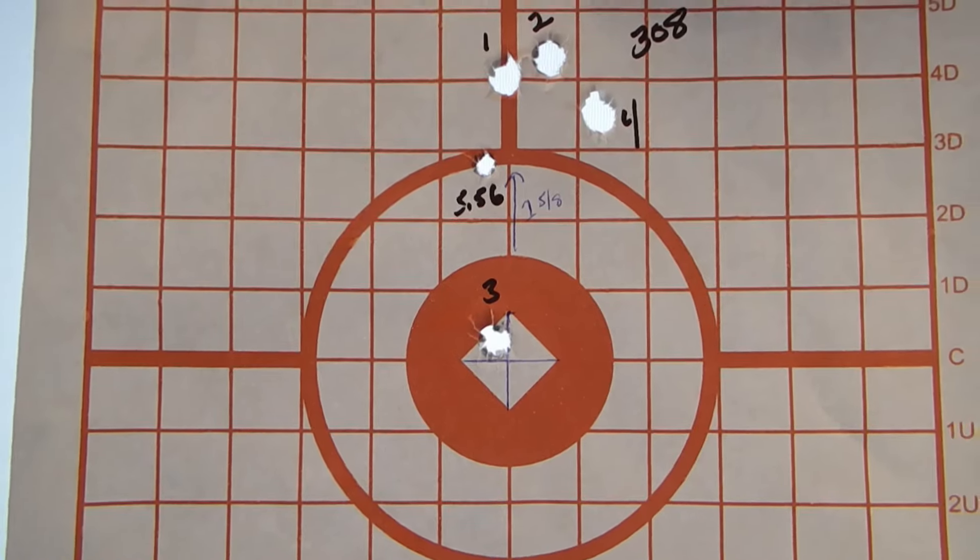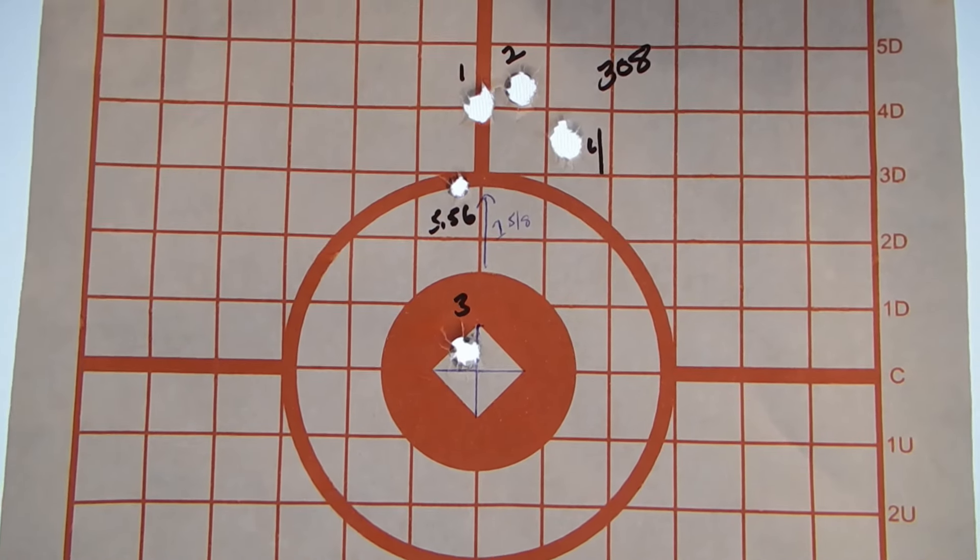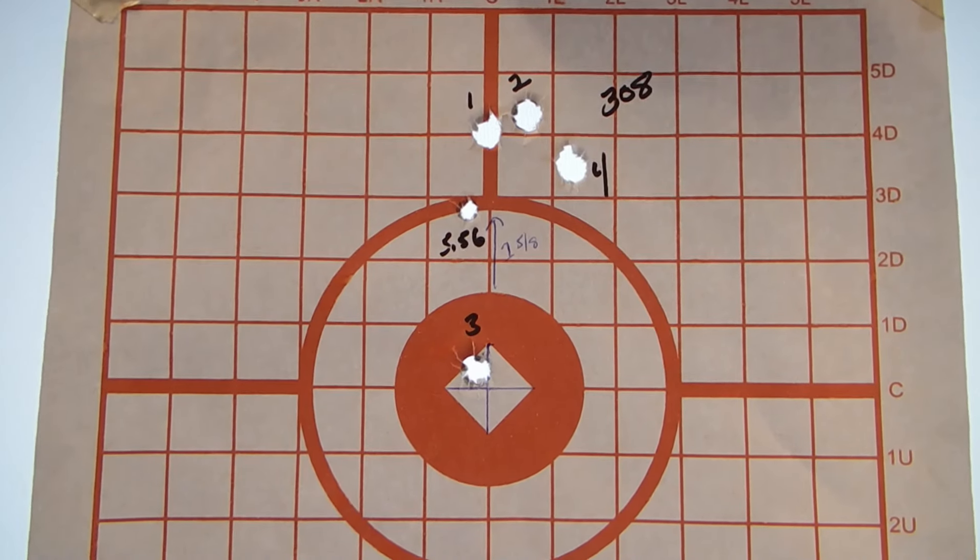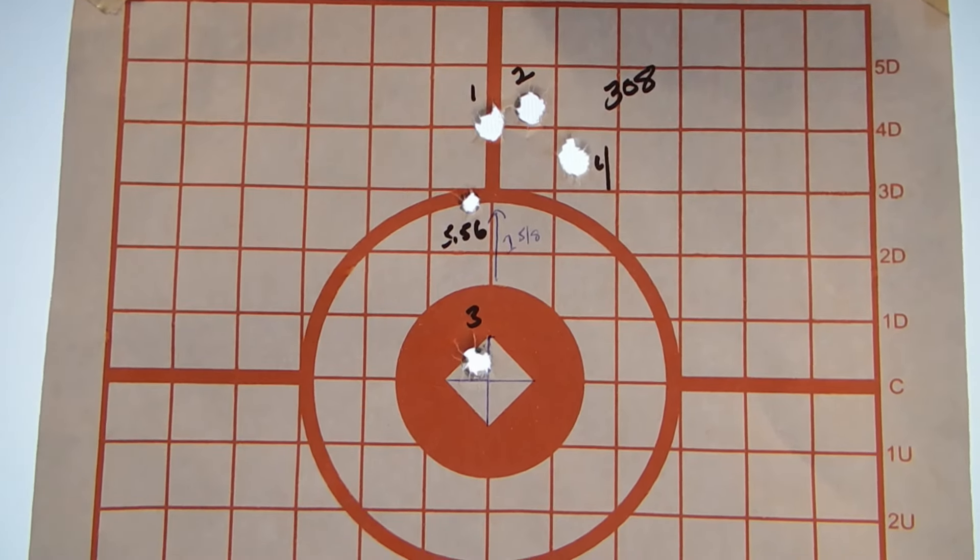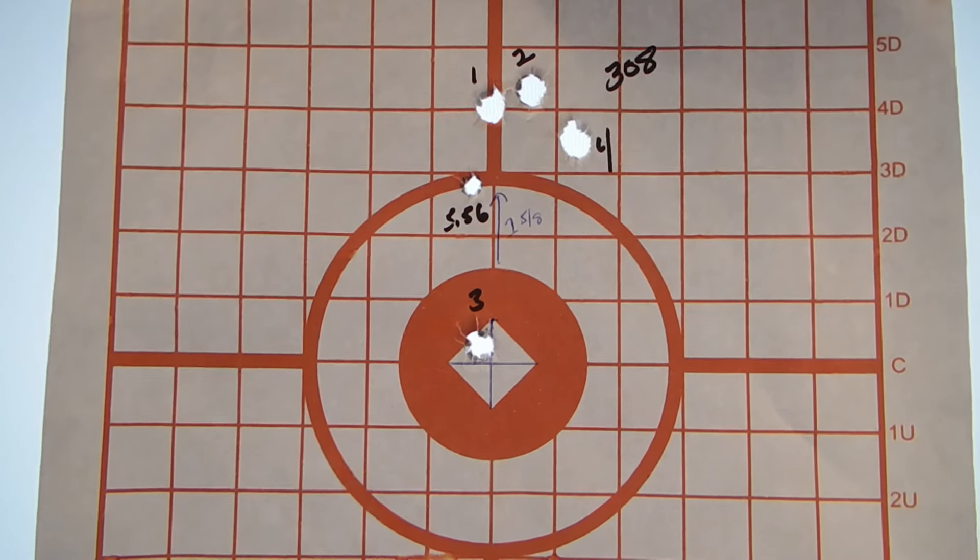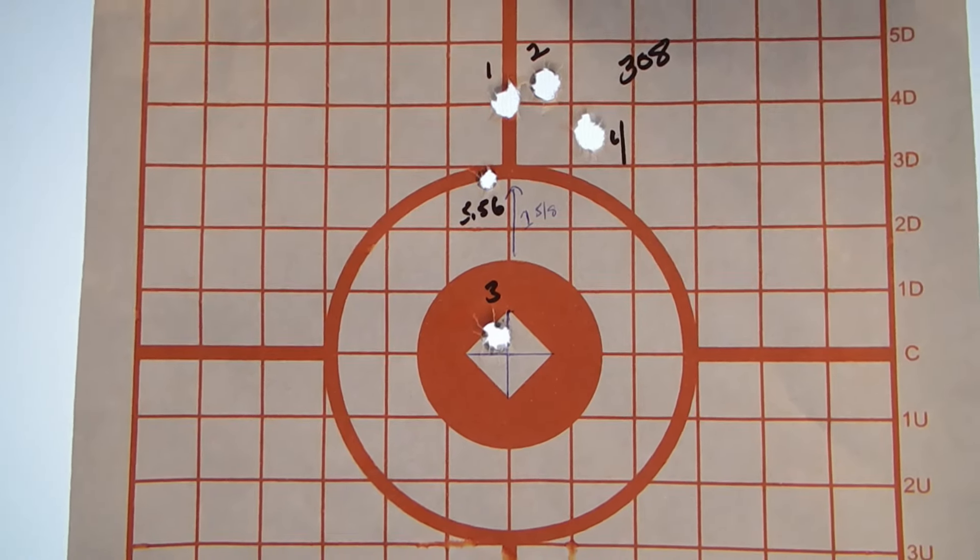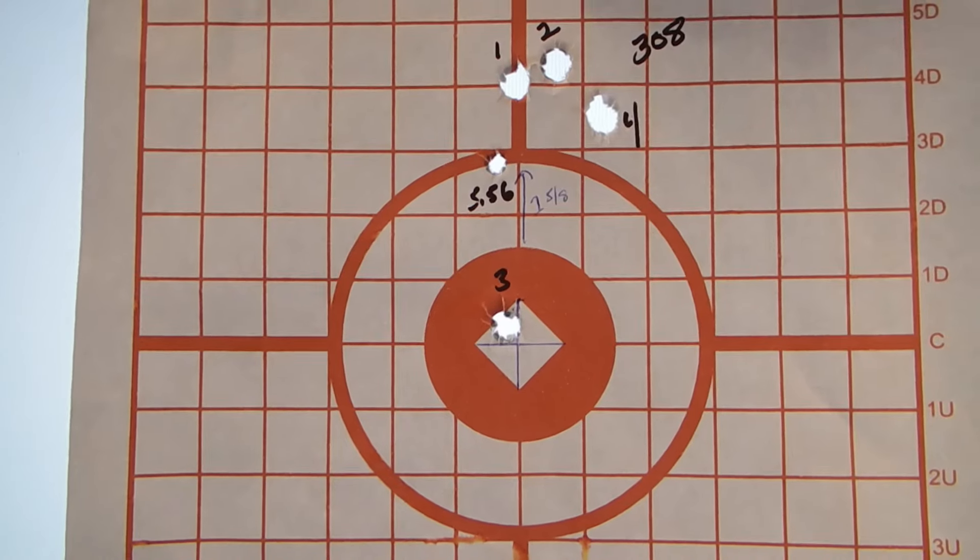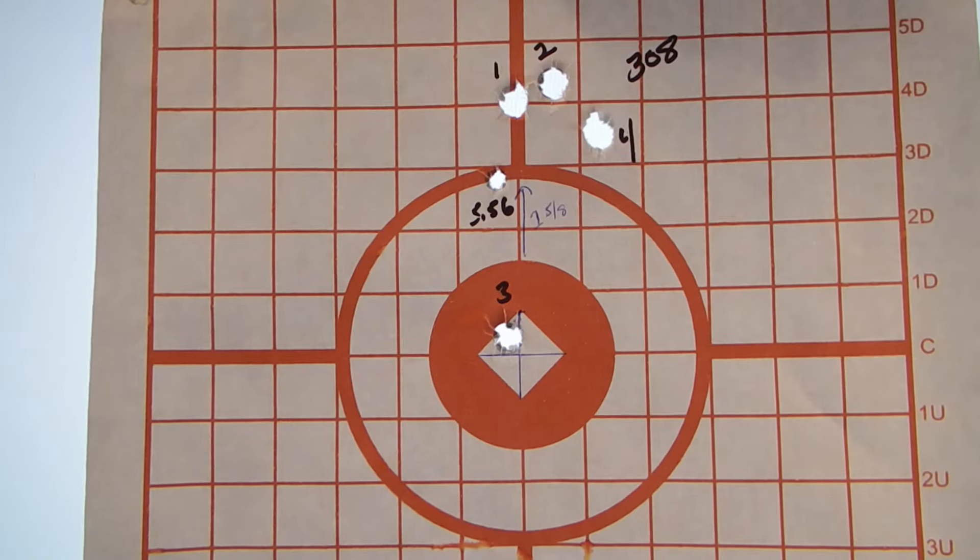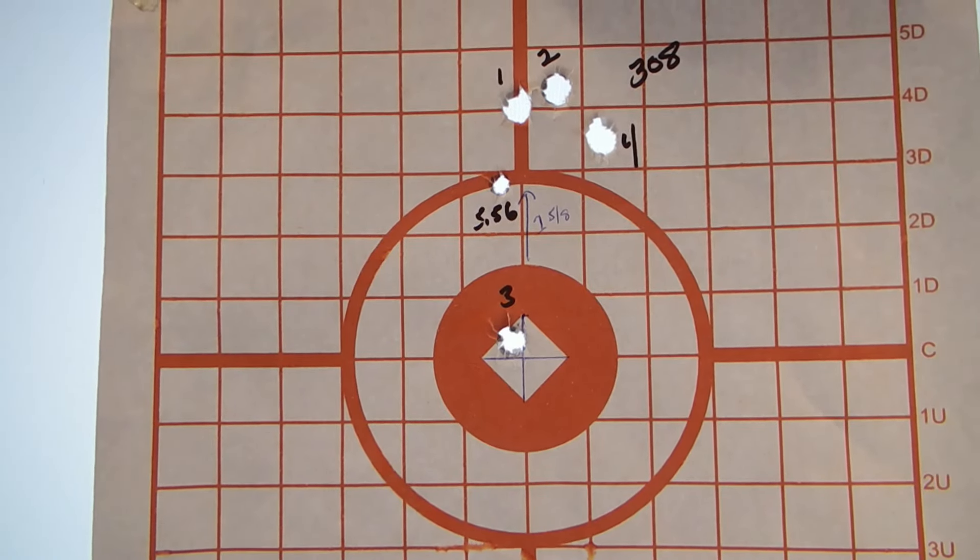Alright, so this is the last target. Now, I was shooting a .308 also that day. And those shots, the one, two, three, and four were already in there. There's only one labeled as the 5.56. Where it hit was one and five eighths inches high of center. And what I did is I just moved it one click down and I left it. I did not move it right or left. I think that left is me pulling it just a hair.